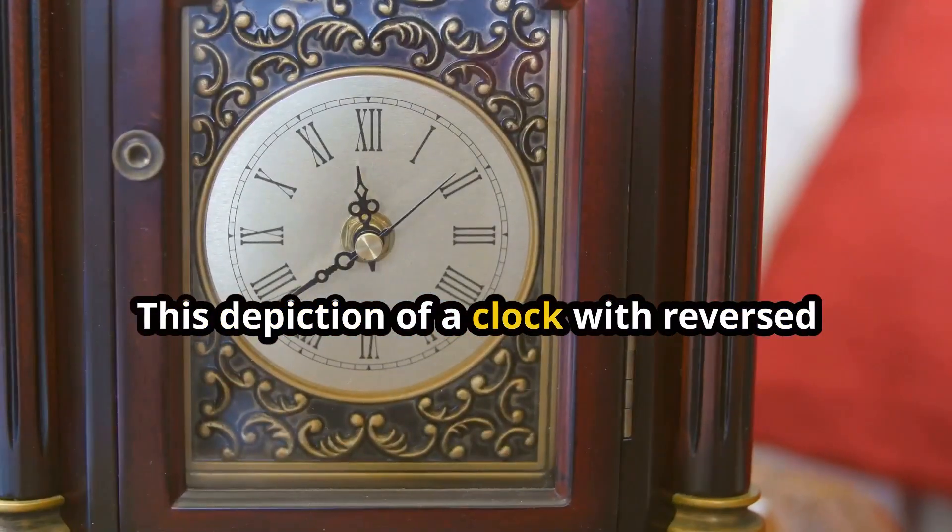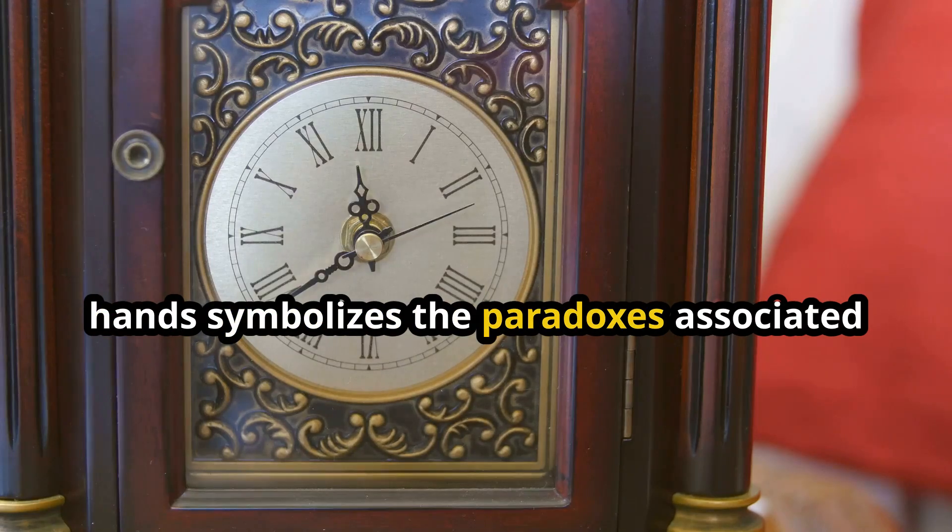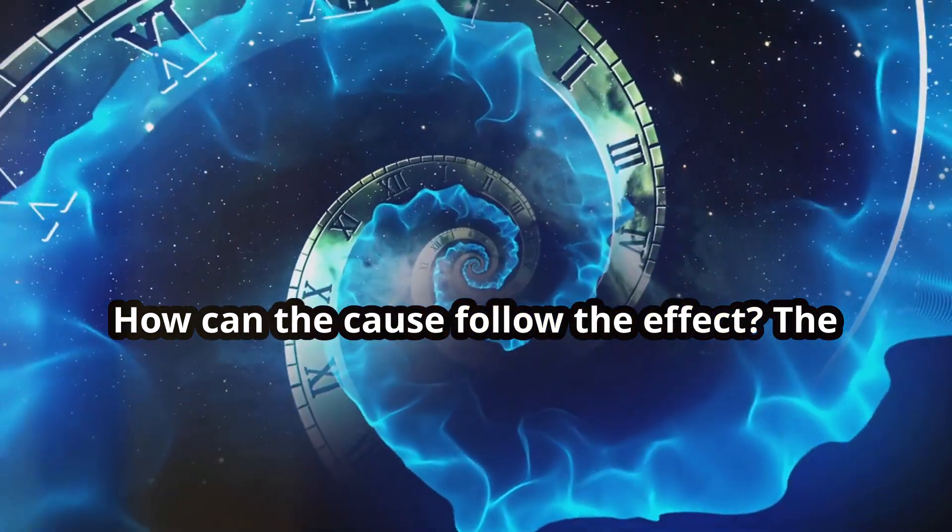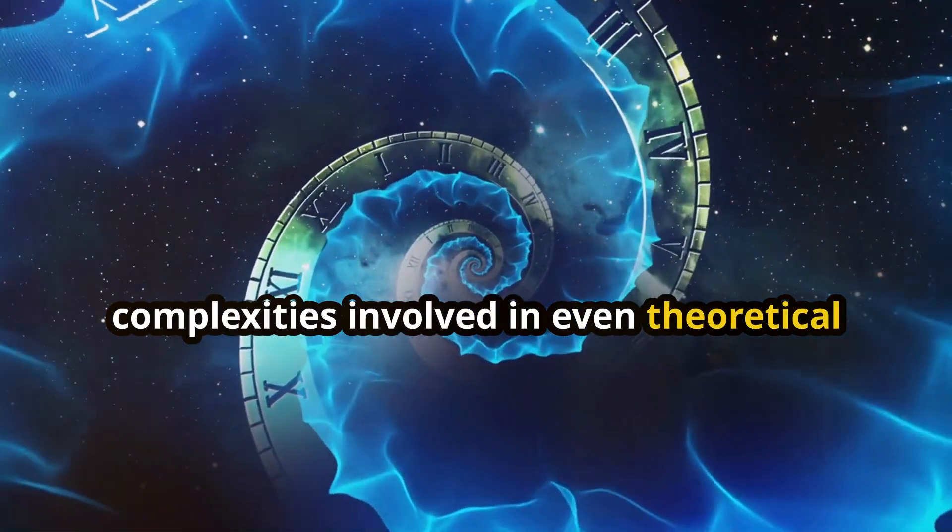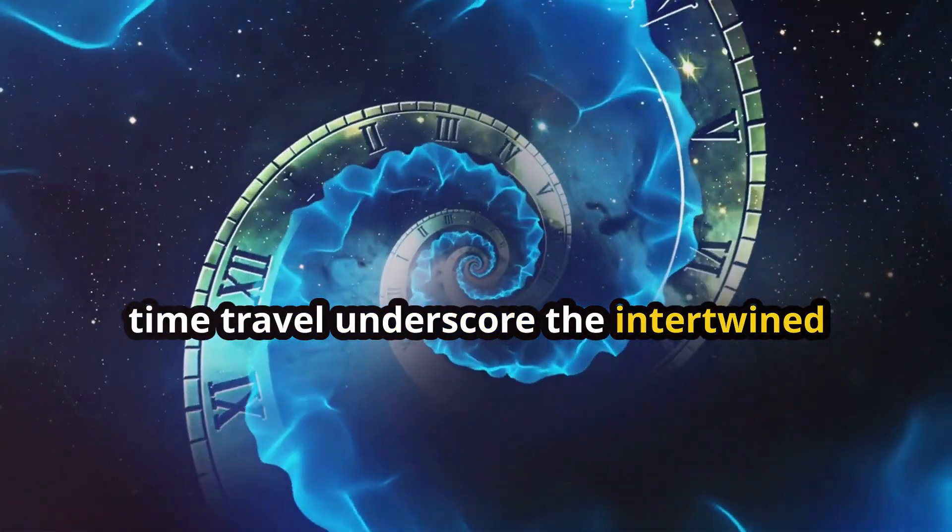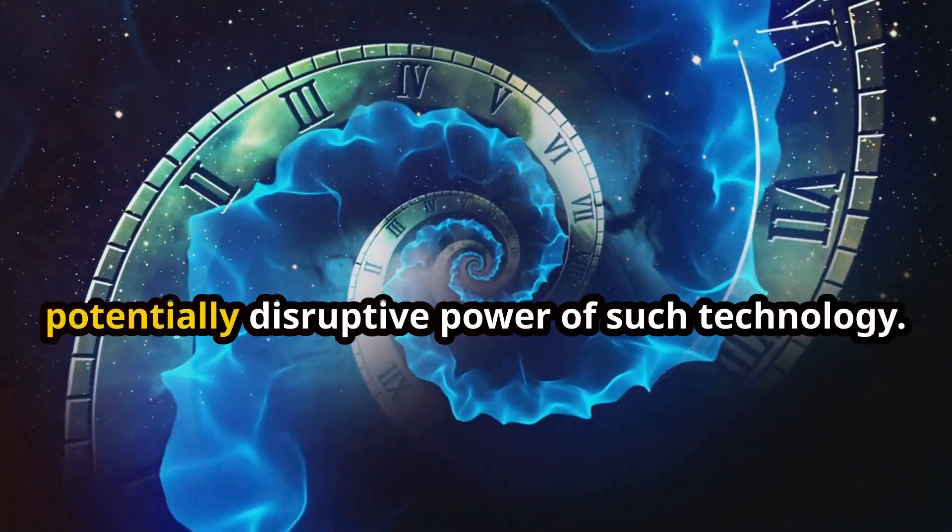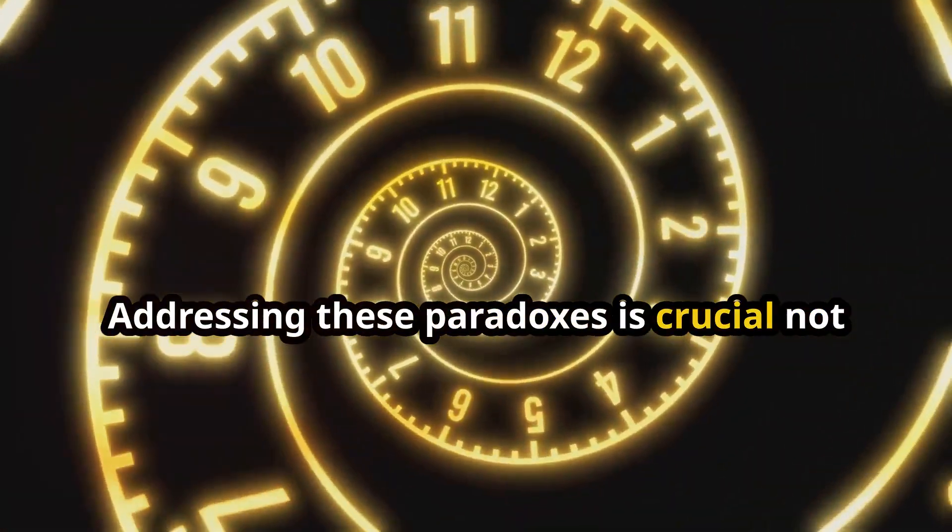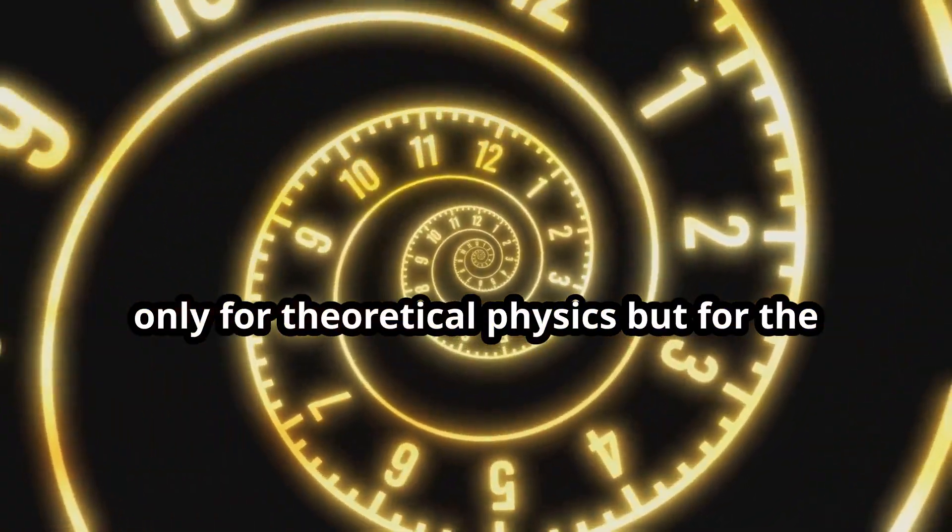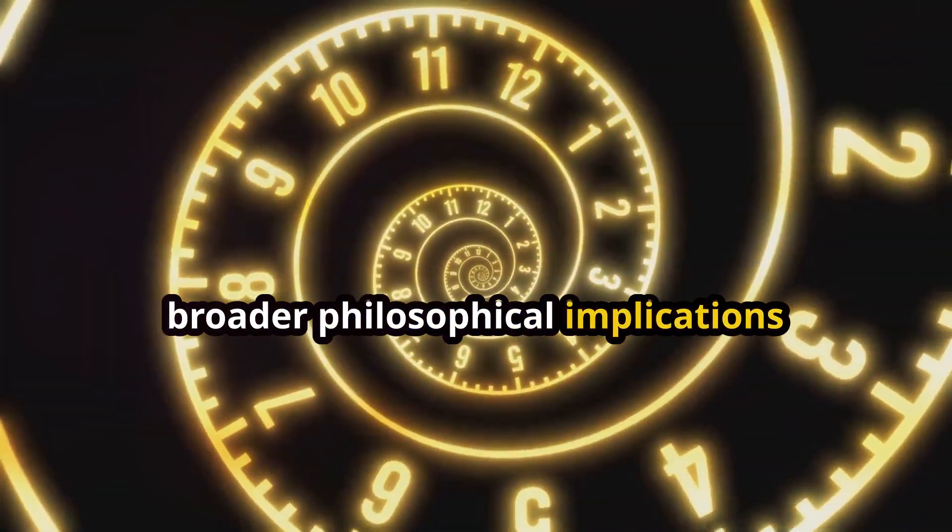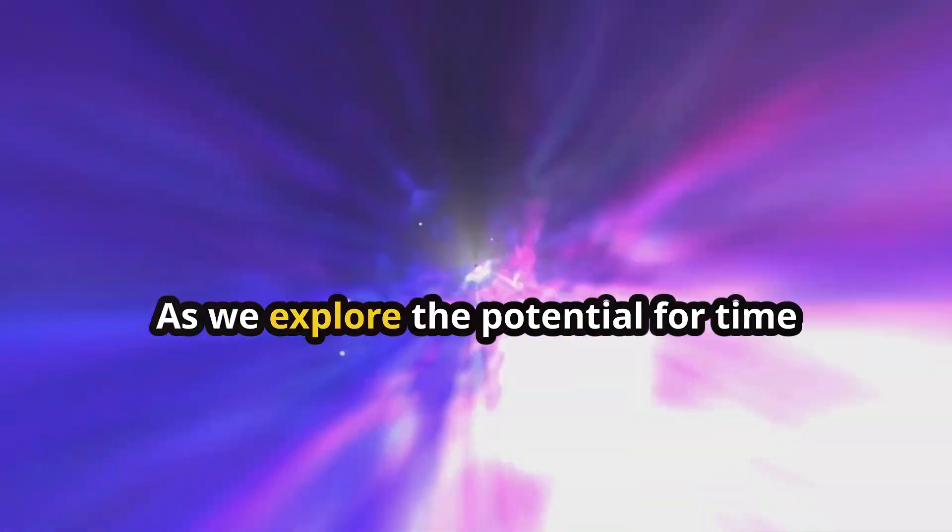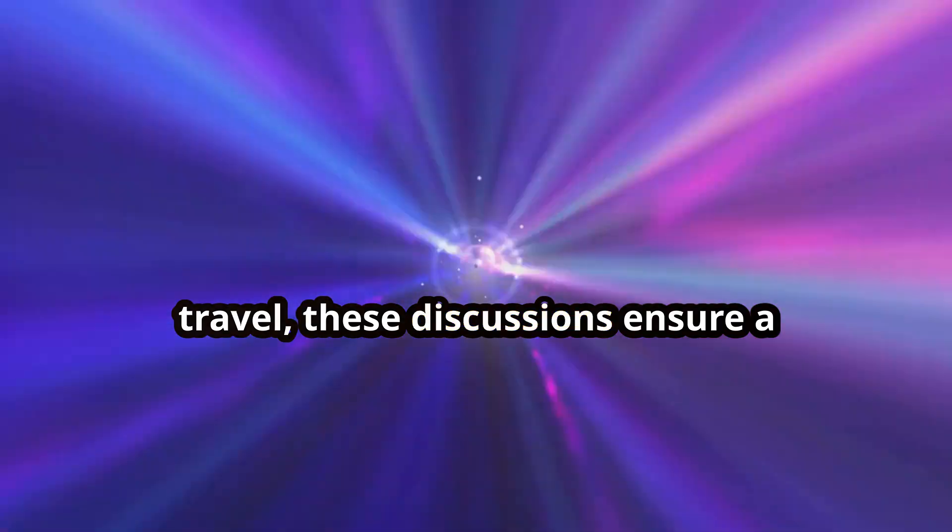This depiction of a clock with reversed hands symbolizes the paradoxes associated with reversing time. How can the cause follow the effect? The complexities involved in even theoretical time travel underscore the intertwined nature of time and ethics and the potentially disruptive power of such technology. Addressing these paradoxes is crucial not only for theoretical physics but for the broader philosophical implications concerning free will and the nature of reality itself. As we explore the potential for time travel, these discussions ensure a comprehensive understanding of its consequences.